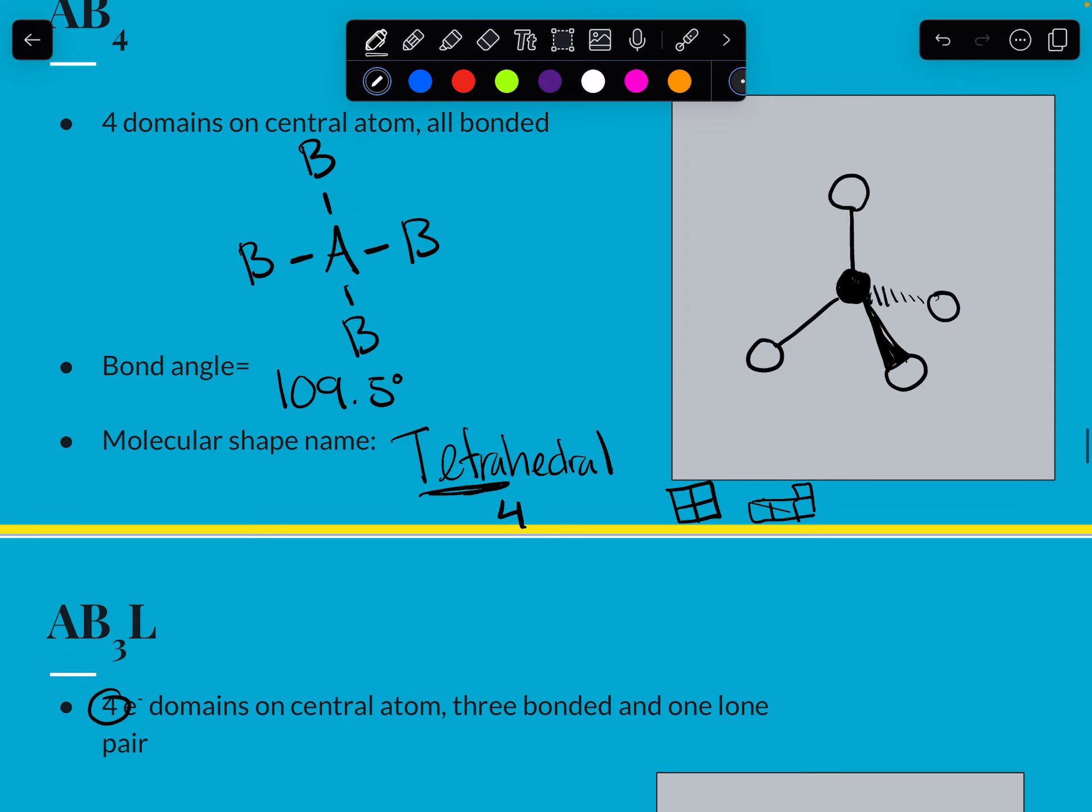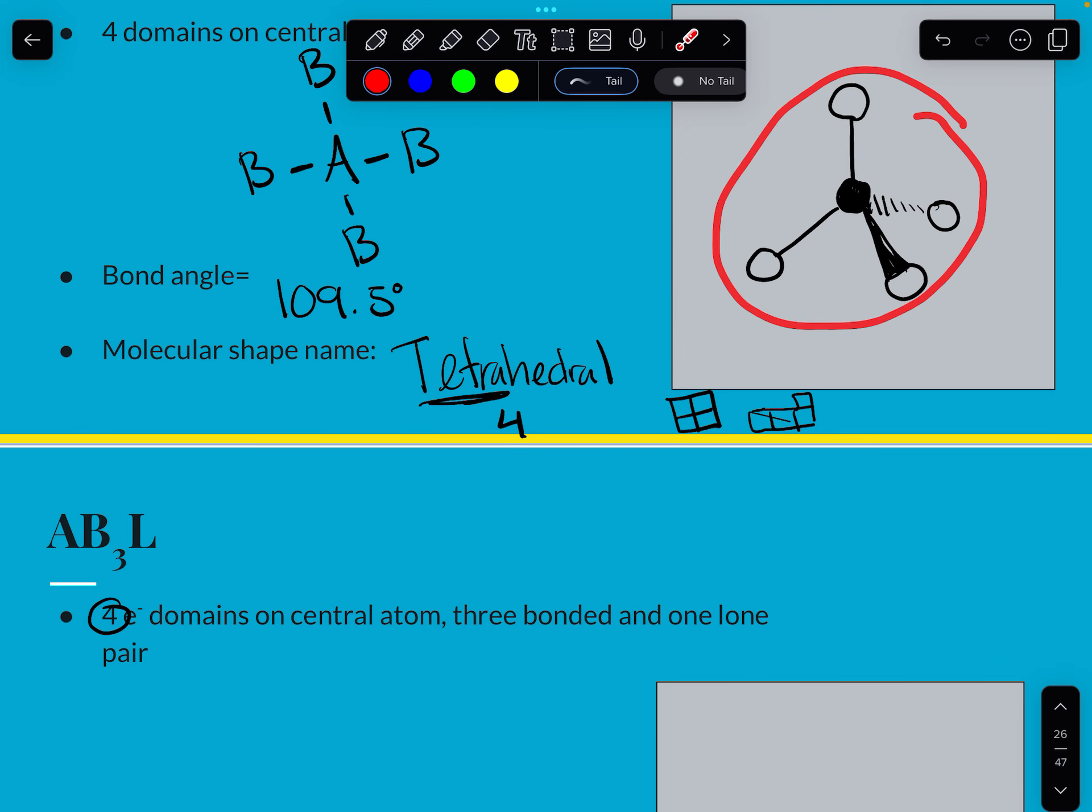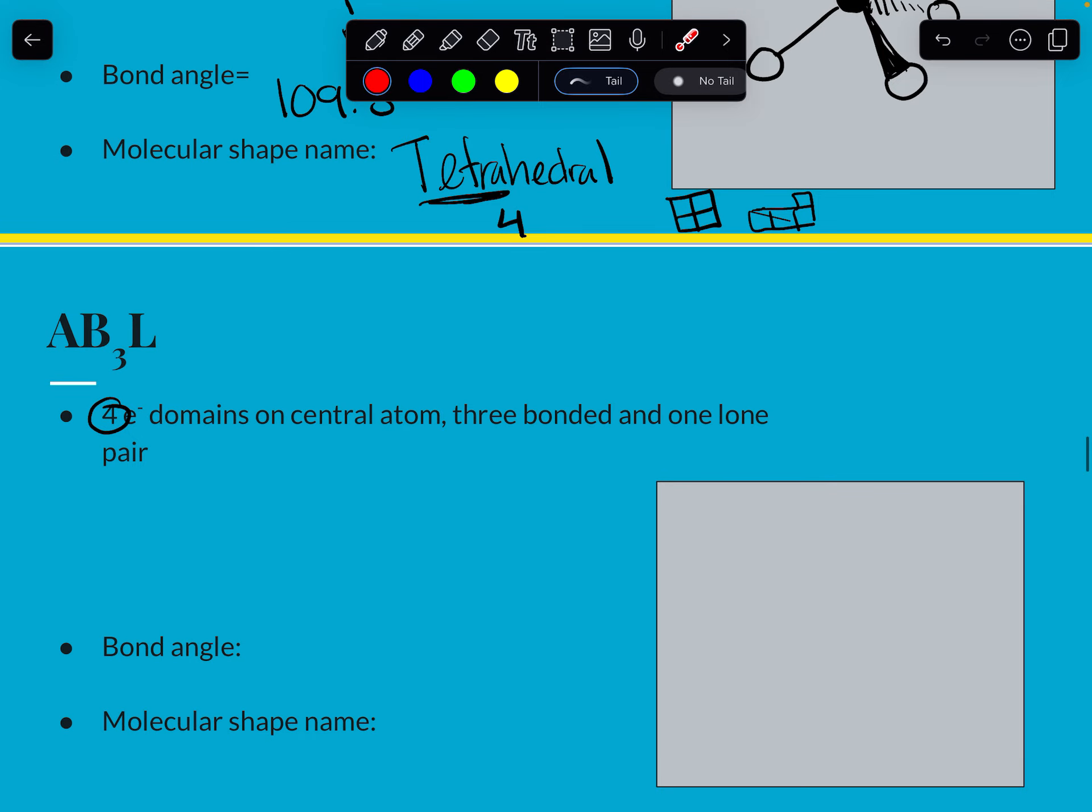All right. Still in the family of four. So keep visualizing this as the root, but now just some of the sides are going to turn into ghosts. So we have A, B, B, B, and then a lone pair. So once again, still one, two, three, four. So in our picture, we have our center one. I'm going to turn my top one into the ghost. And then we still have our tripod going on down here. So the name of this shape, once again, is we're only naming this because we can't see the ghost.